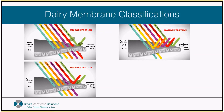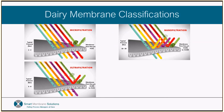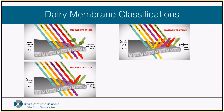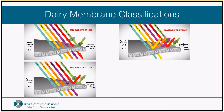Nanofiltration is becoming more and more prevalent on the back of a UF or RO process to further allow higher total solids retentates to be produced whilst maintaining acceptable permeate flux levels. Due to the increase of osmotic pressure in NF streams, system pressure often starts at no less than 10 bar, which is around 145 psi, and runs higher.